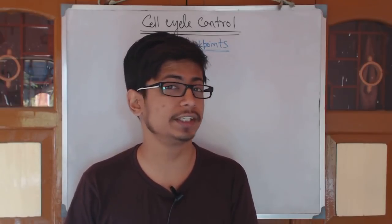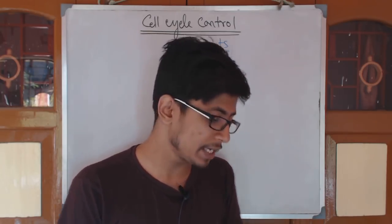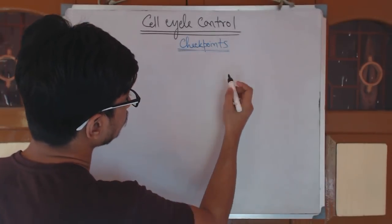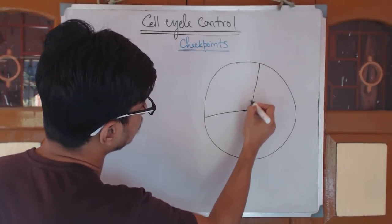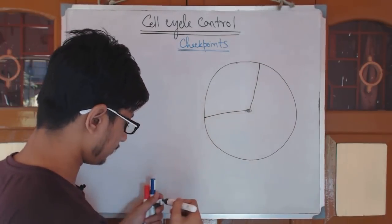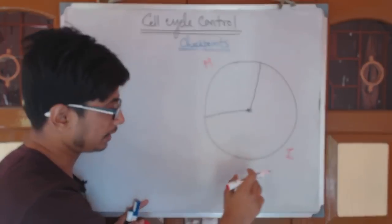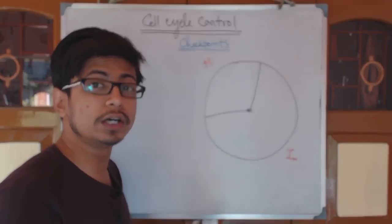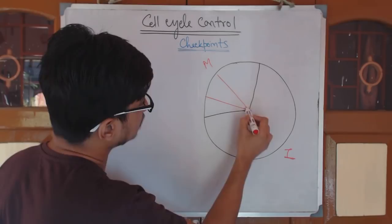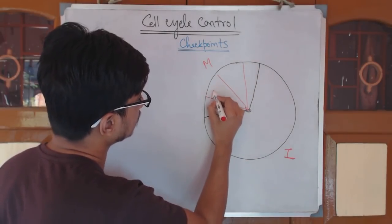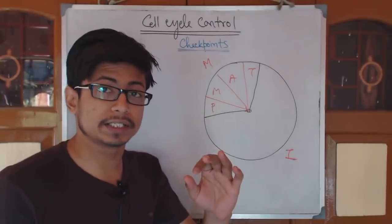The rest of the time in interphase the cell prepares for cell division, and cell preparation is more important than the execution and the division itself — because if the cell is not prepared properly, it will never be allowed to divide. The interphase is much longer in time compared with the M phase because the preparation is much bigger. In the M phase we have prophase, metaphase, anaphase, and telophase.